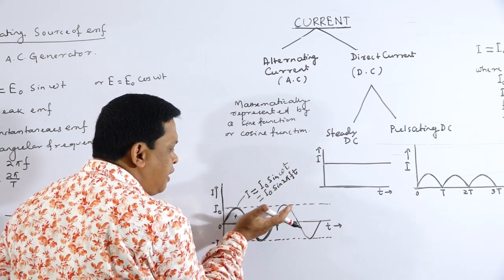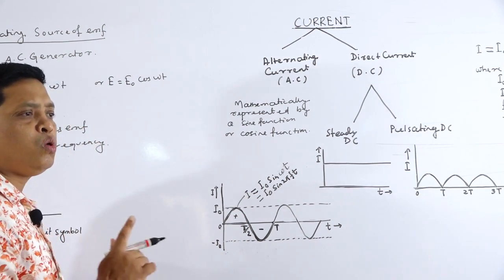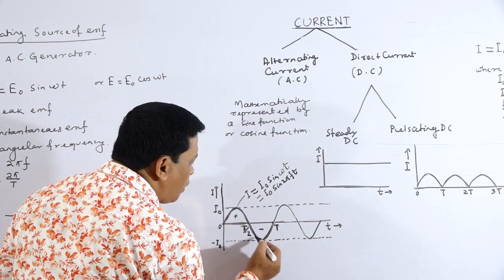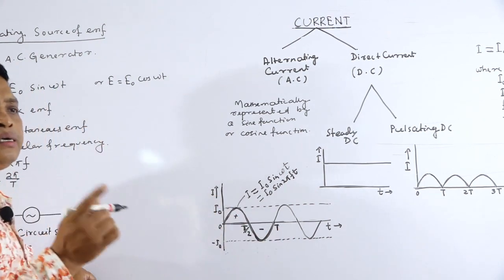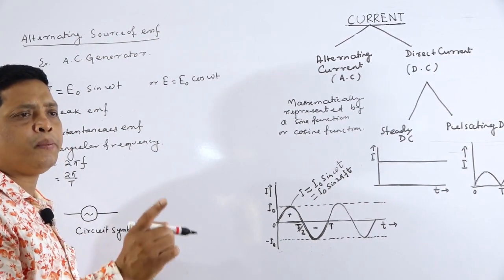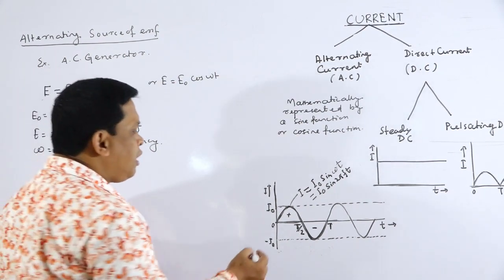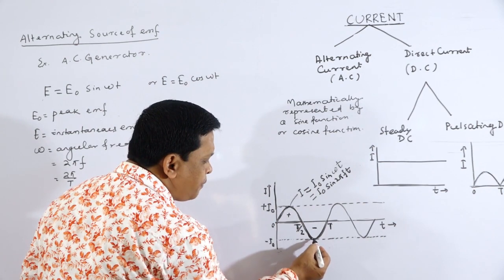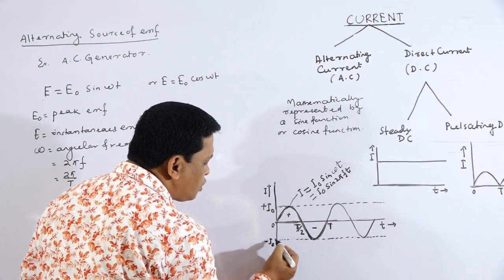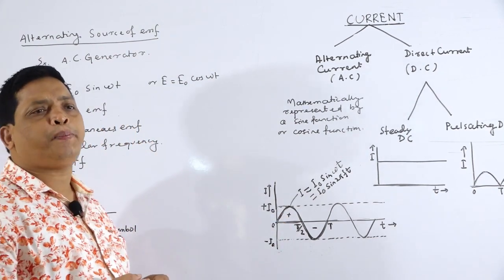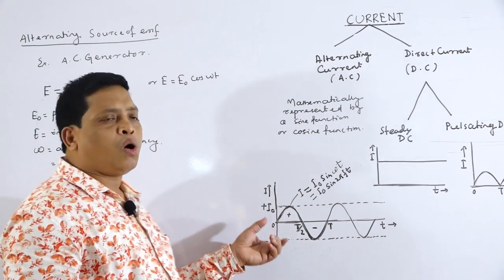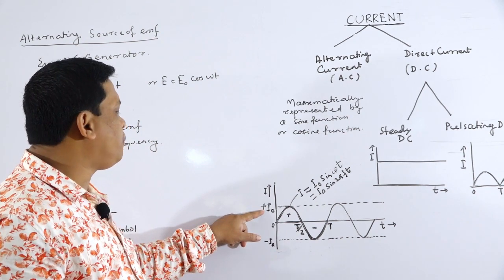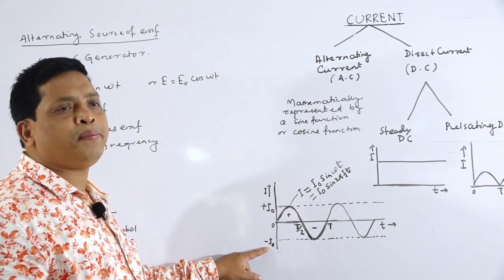Above the time axis is the positive half cycle; below the time axis is the negative half cycle. The current takes a maximum value of plus I₀ in the positive half, and minus I₀ in the negative half. This I₀ is known as peak current or maximum current, also called current amplitude, denoted by the symbol I₀.